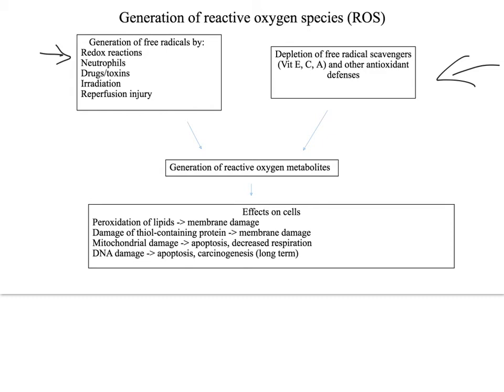The effects on the cells are very specific. Peroxidation of lipids causes membrane damage. Damage of thiol-containing proteins can also cause membrane damage. Mitochondrial damage can result in apoptosis, which is programmed cell death and decreased respirations. And DNA damage can also cause apoptosis and carcinogenesis over a long-term period of time.